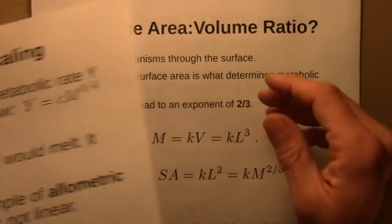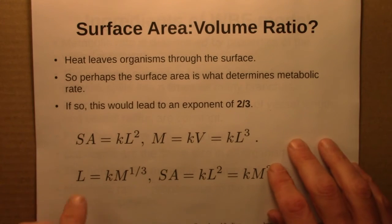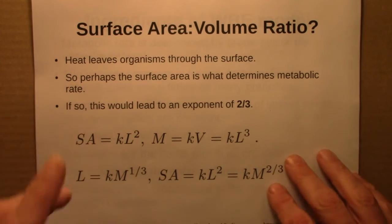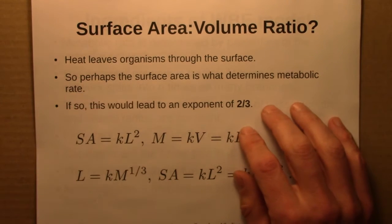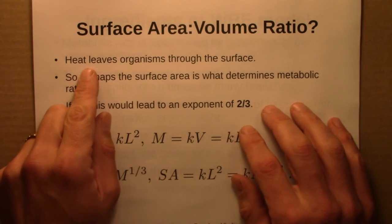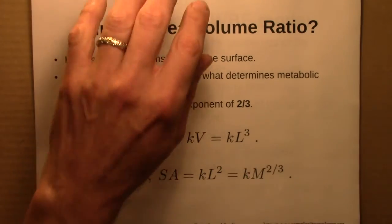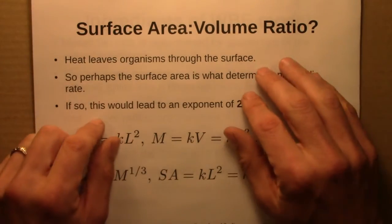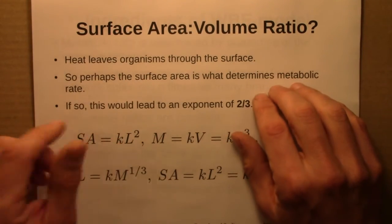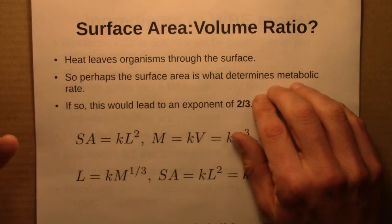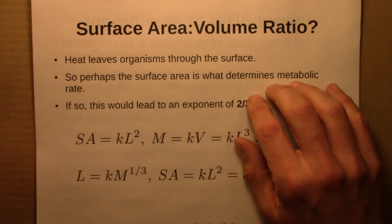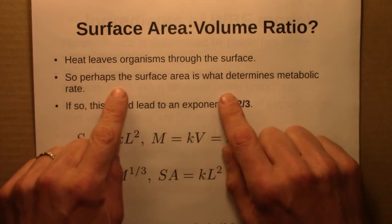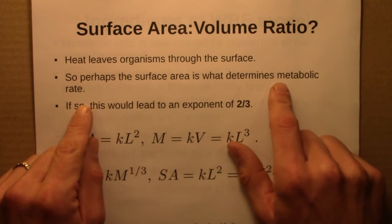The logical thing to consider is the surface area to volume ratio. The key idea is that heat leaves organisms through the surface — that's how we lose heat, through our skin. So if metabolic rate generates heat, and what limits metabolic rate is the ability to get rid of that heat, then it should be surface area that determines metabolic rate.